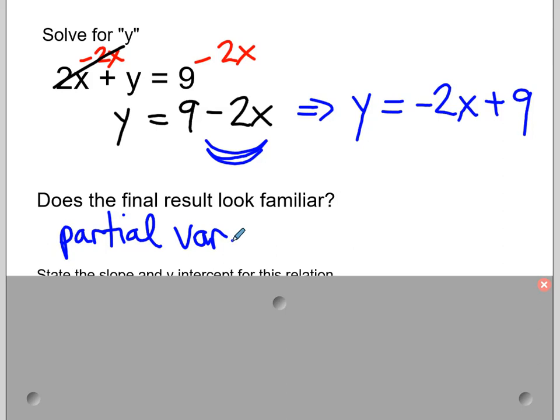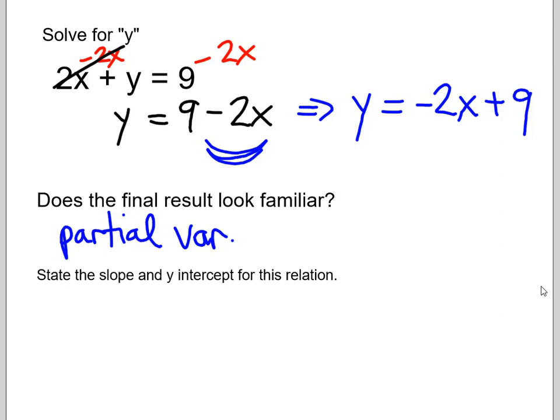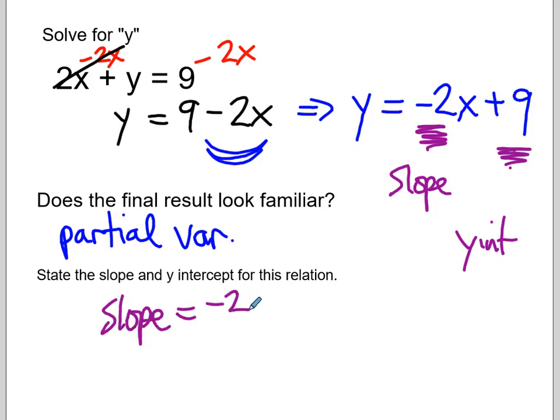Now, does that result look familiar? And hopefully it does. You should recognize that as a partial variation. Okay, and this is why we do this rearranging of equations. Because we're going to tie it into our linear relationships. Okay, so once I've rearranged it, then could we look at state the slope and y-intercept for this relationship. So a little review. Remember the multiplier here in front of the x is my slope. And this trailing value here is my y-intercept. So the slope is negative 2 over 1. And the y-intercept is 0, 9.